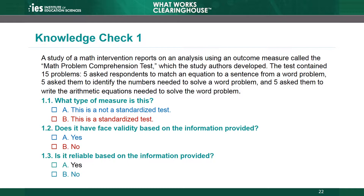B is the correct answer. The item does not mention reliability. The WWC requires a measure of internal consistency, like Cronbach's Alpha, of 0.5 or higher; a test-retest statistic of 0.4 or higher; or inter-rater reliability, like a kappa coefficient, of 0.5 or higher.